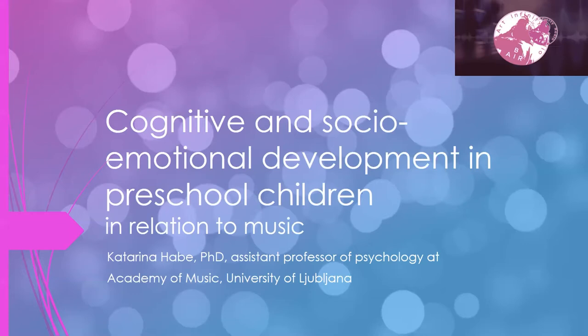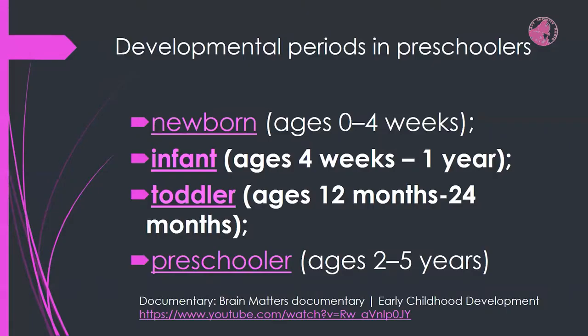In order to use sound and music in the most effective way, we have to be aware of the key characteristics of child development, especially cognitive and socio-emotional development. There are many classifications of developmental periods in preschoolers. I'll use one that classifies newborns from birth to four weeks, infants from four weeks to one year, toddlers from one to two years, and preschoolers from two to five years. I'm going to focus especially on infants and toddlers.